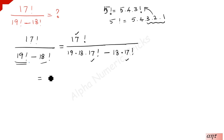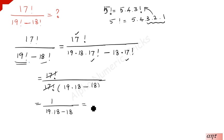We have to take it outside. 17 factorial divided by, here you have 17 factorial is common, take it outside, 19 times 18 minus 18, which is equal to, here 17 factorial and 17 factorial get cancelled, and the remaining terms you have is 1 over 19 times 18 minus 18. Here also you can take 18 outside.